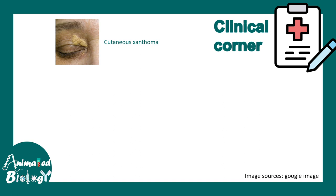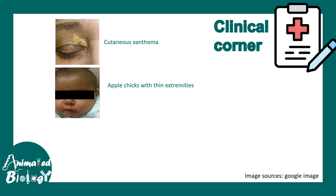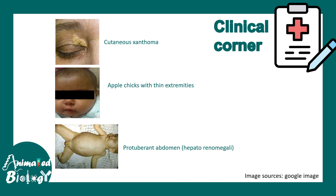From a clinical perspective, one prominent feature is cutaneous xanthoma — fatty patch depositions underneath the skin, which is also common in hypertriglyceridemia. Another feature includes 'apple cheeks' with thin extremities. Patients also present with a very protuberant abdomen, because enlargement of the liver and kidney due to hepatomegaly and renomegaly causes significant distension of the abdomen.